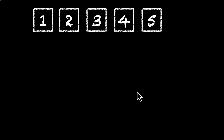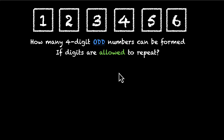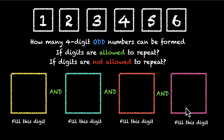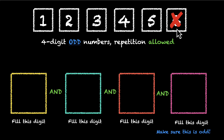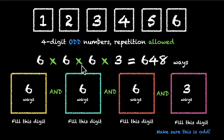Now we have the digits 1, 2, 3, 4, 5, and 6, and this time we are making four-digit odd numbers. The constraint is on the last digit — it must be odd. So we can't have 6, 4, or 2; we can only pick from 1, 3, and 5 — so 3 ways to fill that box. The remaining three boxes have no constraint and repetition is allowed, so each can be filled in 6 ways. Multiplying: 6 × 6 × 6 × 3 = 648 four-digit odd numbers when repetition is allowed.